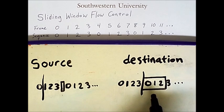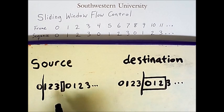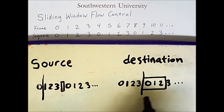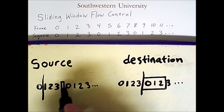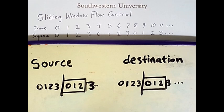The destination has said, I'm ready to receive 0. The source is still waiting for that acknowledgement. It eventually shows up, at which point, this bar moves over, and the window expands. Now the source can continue sending frames.